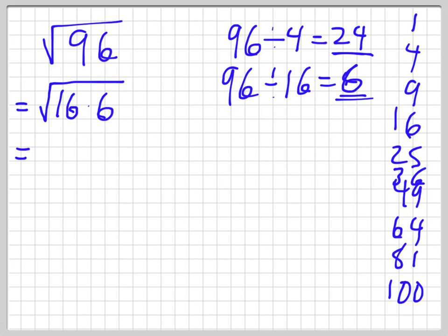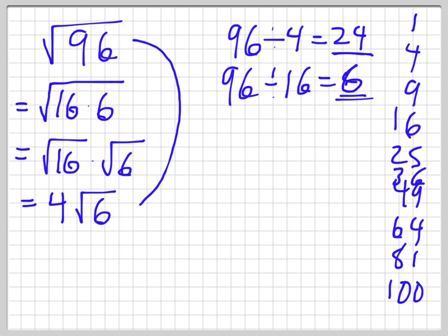And that becomes square root of 16 times square root of 6, which is 4√6. And there we go, guys. I've taken another unsimplified square root and changed it to a simplified square root.